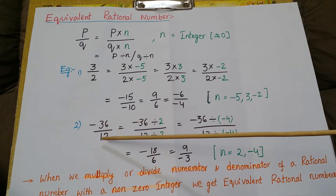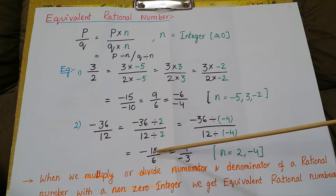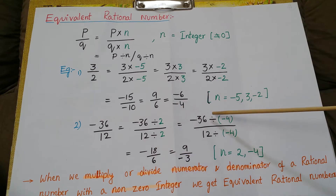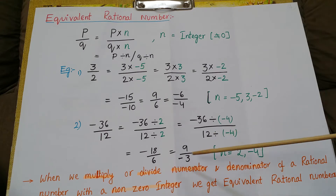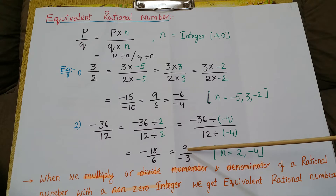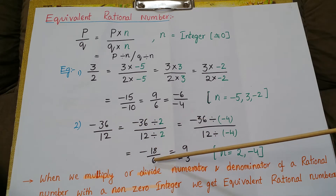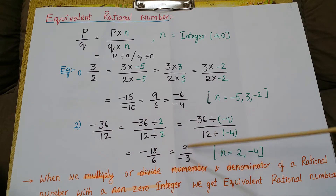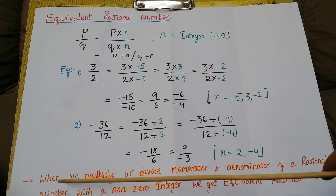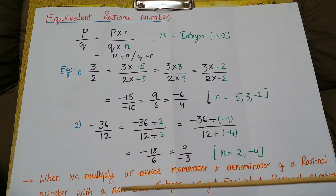Next example: take minus 36 by 12. Dividing both numerator and denominator by 2 gives minus 18 by 6. Dividing by minus 4 gives minus 9 by 3. So the equivalent fractions for minus 36 by 12 are minus 18 by 6 and minus 9 by 3. Therefore, the definition for equivalent rational numbers: when we multiply or divide the numerator and denominator of a rational number with a non-zero integer, we get equivalent rational numbers.